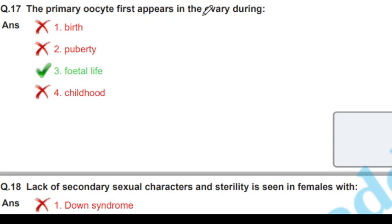Next question: the primary oocyte first appears in the ovary during what stage? Primary oocyte first appears during fetal life, at the start of fetal life in females.